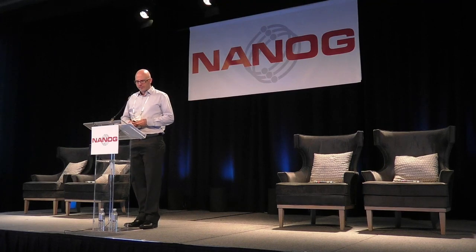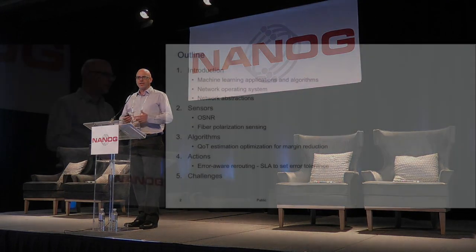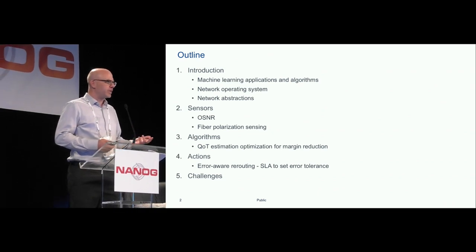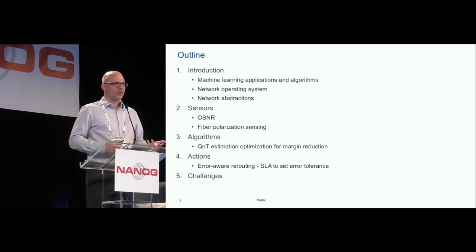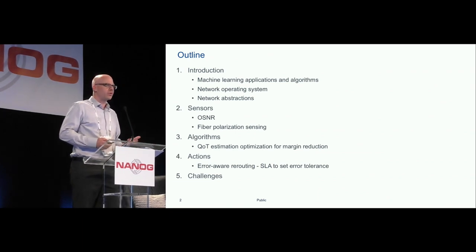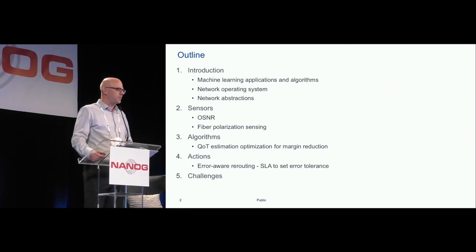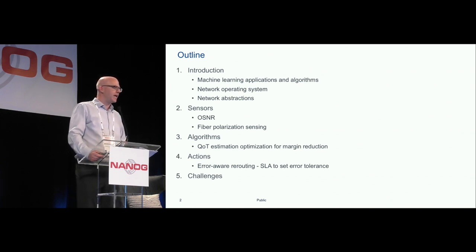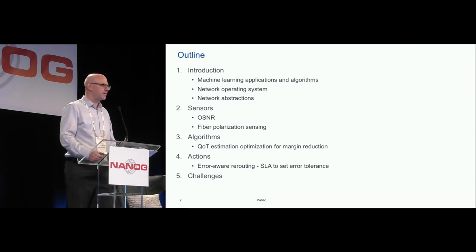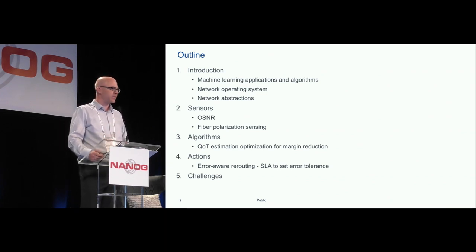I'm going to be speaking about machine learning and optical networks, discussing machine learning applications and algorithms. A big part of this is about a network operating system, because we believe this is necessary to have a dynamic, controllable network that you can run intelligent algorithms on top of. The network operating system will include network abstractions, sensors like optical signal-to-noise ratio and fiber polarization sensing, algorithms like a quality of transmission algorithm, error-aware rerouting, and some challenges and questions for discussion.